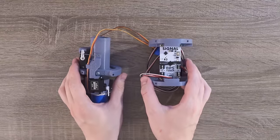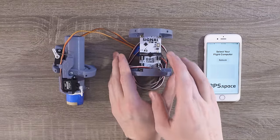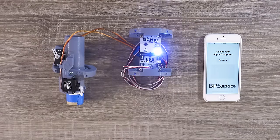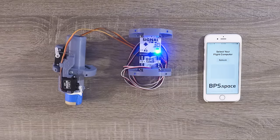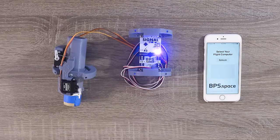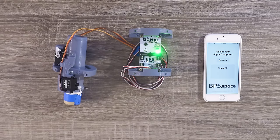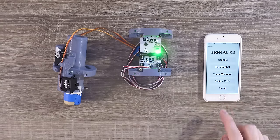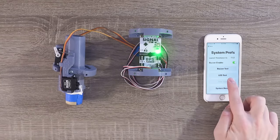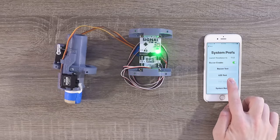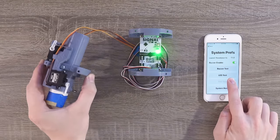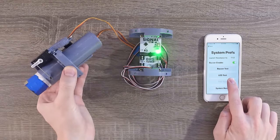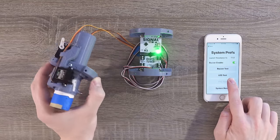With that complete, it's time to turn on SignalR2. When the computer boots up, click on SignalR2 and go into System Prefs. You can tap the TVC test button to give your thrust vectoring mount a try. This button makes the TVC mount slowly go between plus and minus 5 degrees on each axis.